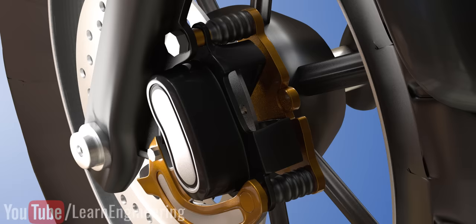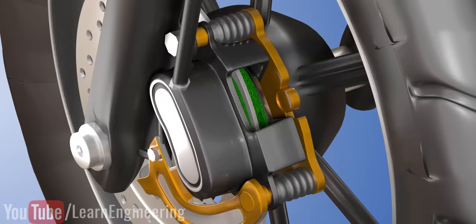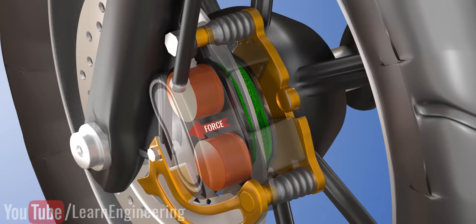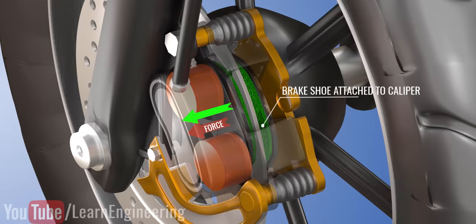You can see how the caliper moves along this fixed part. This means, as the pressure builds up in the cylinder, the floating caliper will also move opposite to the piston's movement. The other brake shoe is directly attached to the floating caliper, so the braking action will happen from both sides simultaneously.